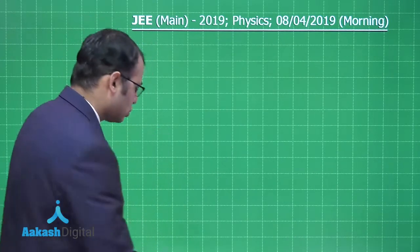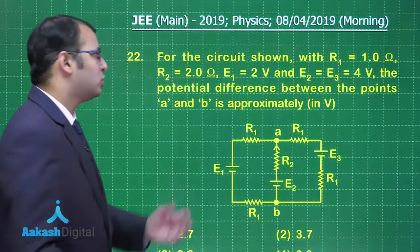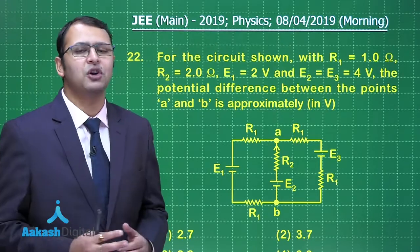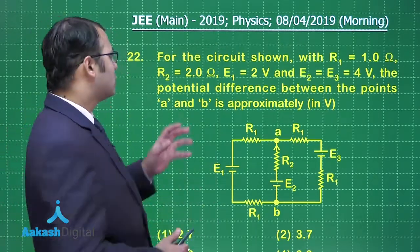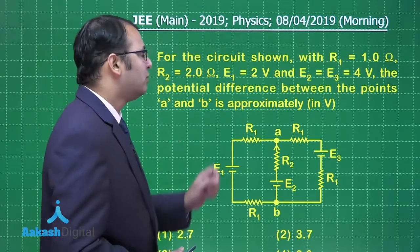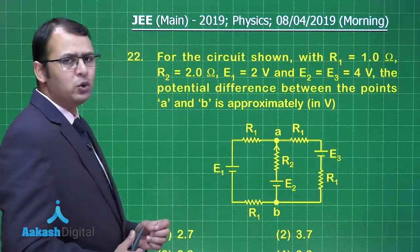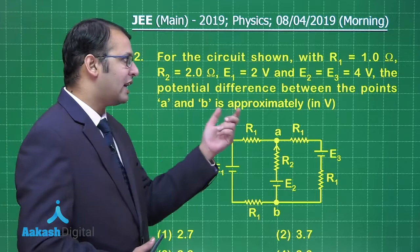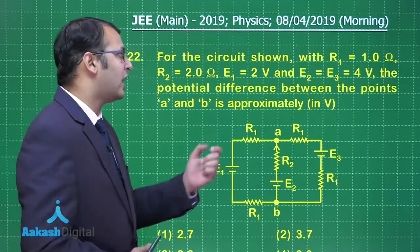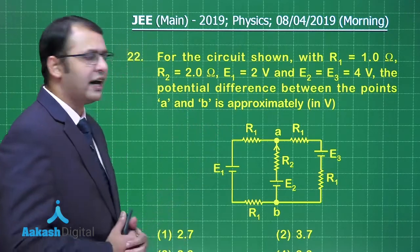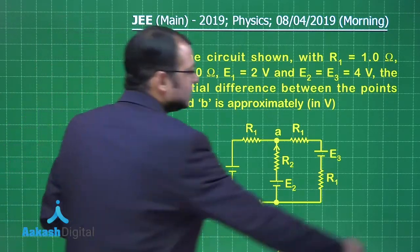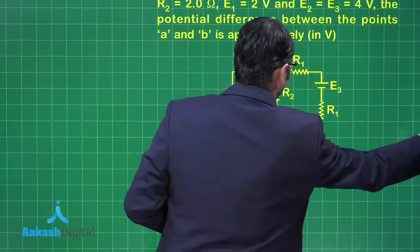Let's take our next question, question number 22. This question belongs to the section of electromagnetism from the chapter current electricity. As per the question, for the circuit shown with R₁ equals 1 ohm, R₂ equals 2 ohm, E₁ is 2 volts, and E₂ and E₃ are both 4 volts, the potential difference between points A and B has been asked.